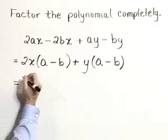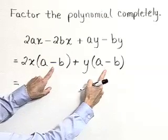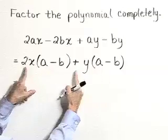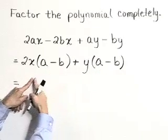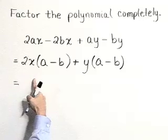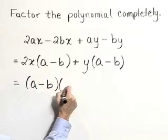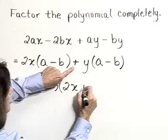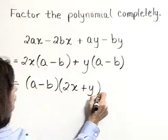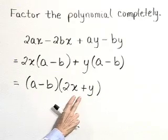Now we've met our goal at this second step of factoring by grouping, insomuch that we've got a common factor of a minus b in both of our large terms here. And now we can pull that common factor out into the front. So to complete the factorization, this becomes a minus b times 2x plus y.